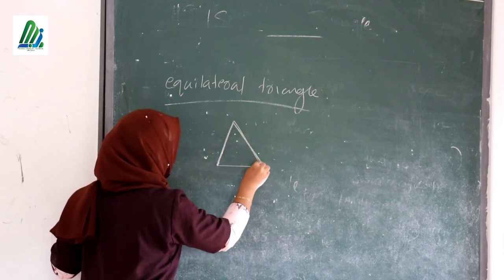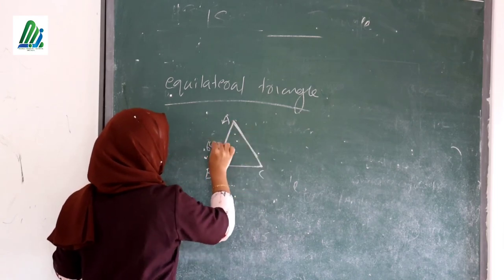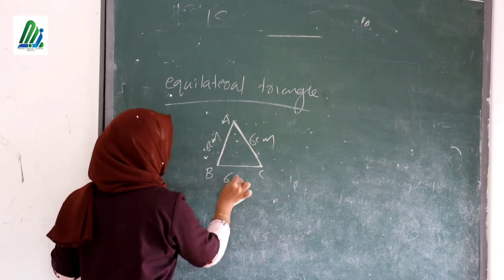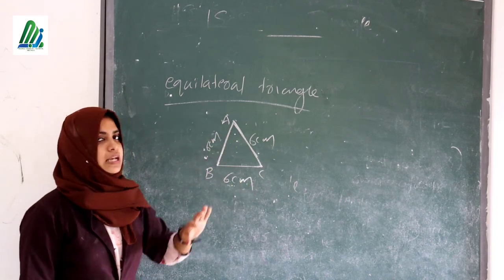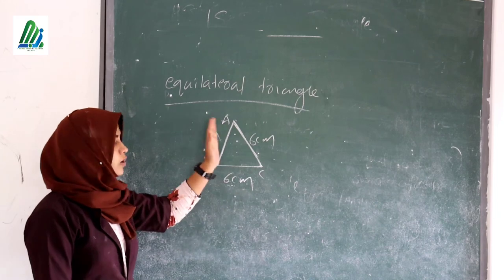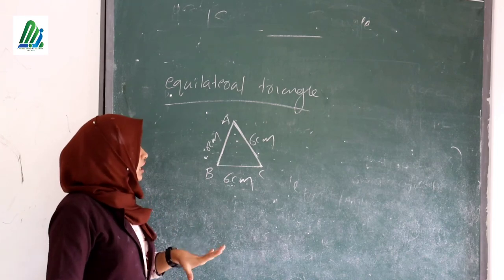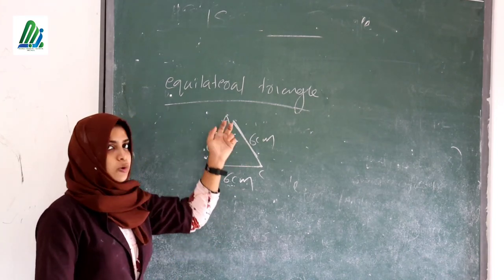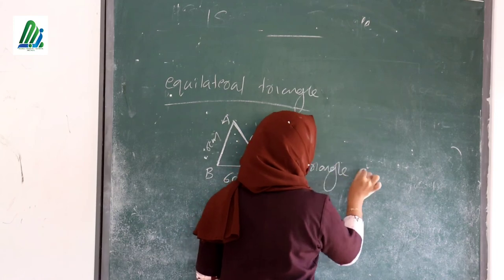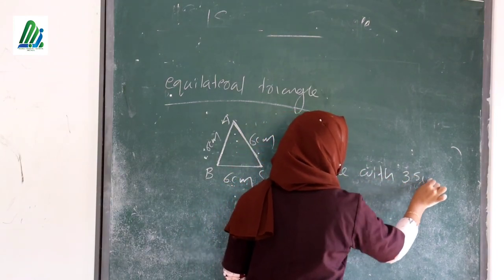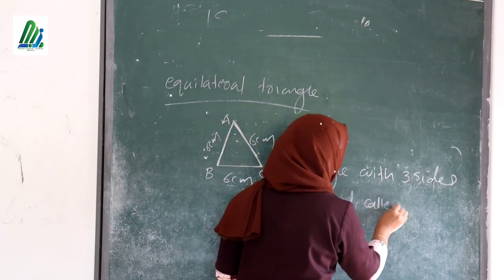Look at this triangle ABC. The sides BC, AB, and AC are all 6cm. Since all three sides of this triangle are equal, we can say that a triangle with three equal sides is called an equilateral triangle.